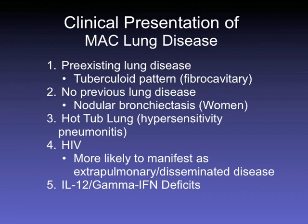We also see hot tub lung or hypersensitivity pneumonitis — these are not necessarily infections but more an immune system manifestation of exposure. Somebody in a hot tub may develop a pneumonitis due to NTM organisms in the water being inhaled. HIV patients are more likely to manifest extra-pulmonary disseminated disease. Patients with certain immune deficits like IL-12 or gamma interferon deficiency become infected, and interferon gamma therapy may be most helpful in those patients.